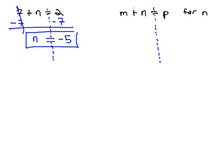This means we need to get rid of the positive m. Just like we got rid of the positive 7 with 7 negatives, we get rid of the positive m with m negatives on both sides. m minus m is 0, leaving the n alone, which is what we're looking for.